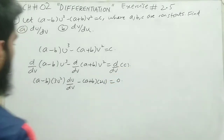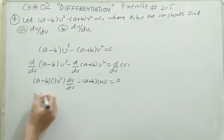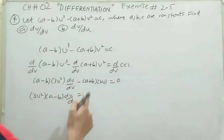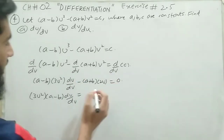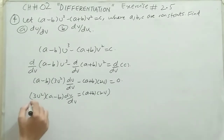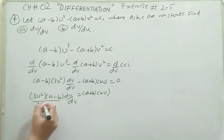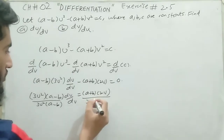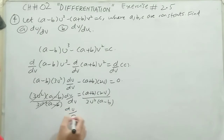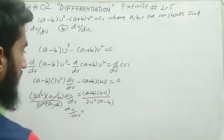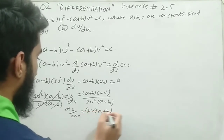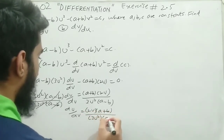The derivative of constant c is zero. So we have: 3u²(a minus b) times du/dv equals (a plus b) times 2v, after shifting the right-hand side term over. Dividing both sides by 3u²(a minus b), we get du/dv equals 2v(a plus b) divided by 3u²(a minus b). This is the required result for du/dv.